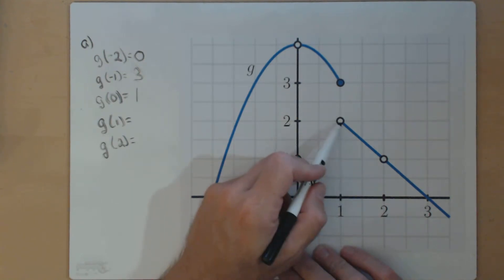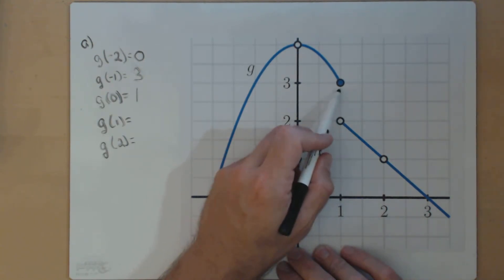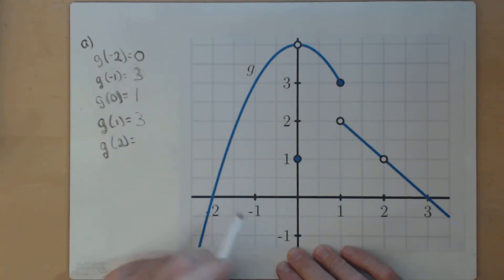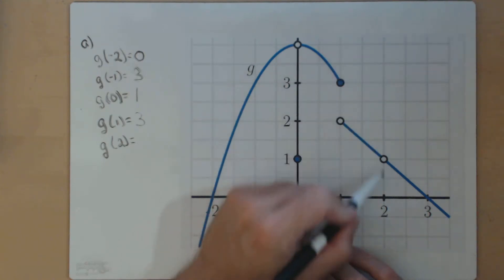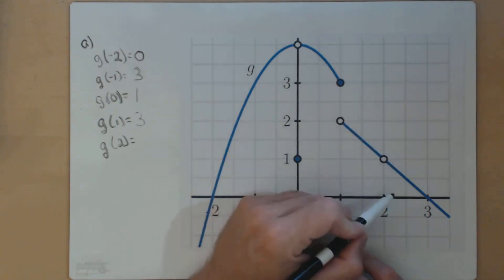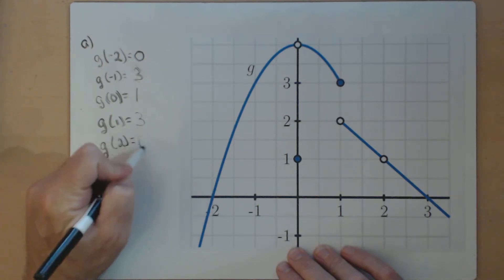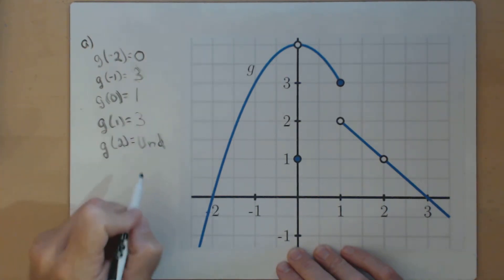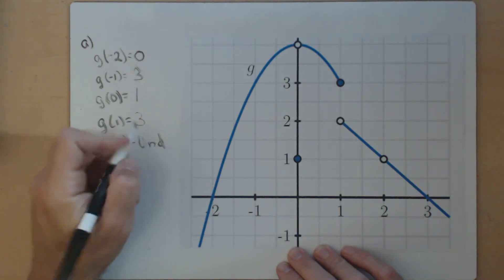g of 1 — again, an open circle, so that's not our output. Our output is actually going to be up here at 3, so g of 1 equals 3. And finally, g of 2 — we get an open circle, no closed circles for 2. So that's going to be undefined, or does not exist. We'll just put 'und' for undefined.